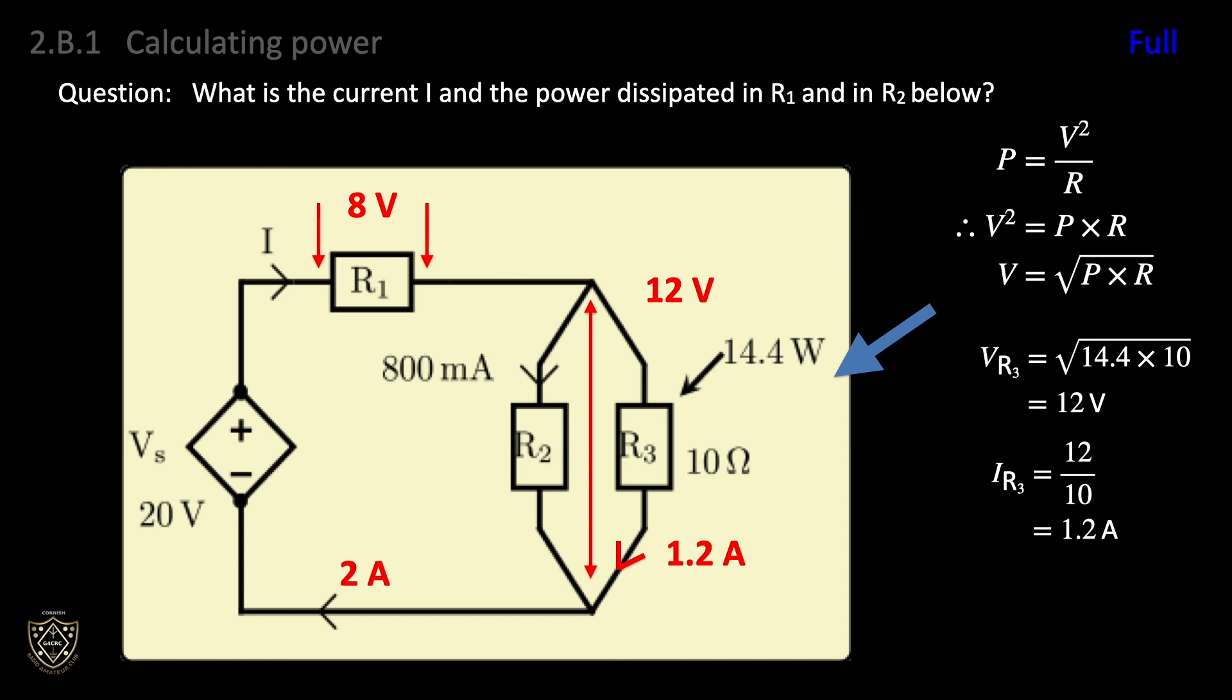The power dissipated by R1 is simply P equals I times V, or 2 amps times 8 volts, which is 16 watts. And the power dissipated by R2 is similarly determined. There is 12 volts across R2 and 800 milliamps flowing through R2, so multiplying them together gives 9.6 watts. So that answers the question. But it's worth also noting that this is a coherent system in as much as if you add up the power dissipated in the three resistors, you get 40 watts, which is equal to the supply voltage times the supply current. In other words, the power supply is supplying 40 watts of power and the resistors are dissipating 40 watts of power.